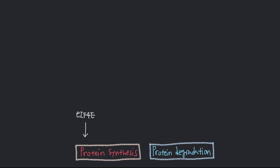Protein translation is also increased by phosphorylation of S6 ribosomal protein, which is mediated by P70S6 kinase, or P70S6K. Both of these proteins are the major downstream effectors of a very important protein complex called mTOR — mammalian target of rapamycin complex 1.